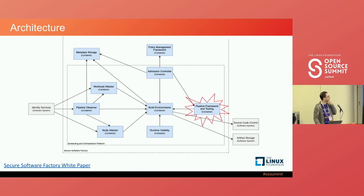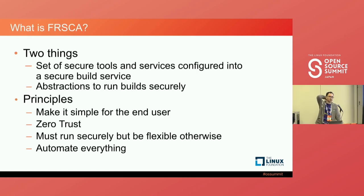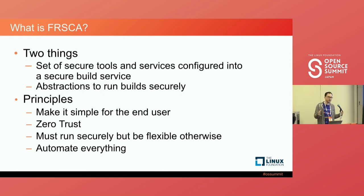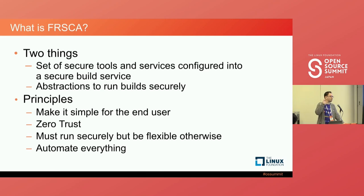The area highlighted in red is what we're focused on for this talk. So what is Fresca? Fresca is mostly two main things. The first is a set of secure tools and services configured into a secure build service — components like SPIFFE/SPIRE, Tekton, Tekton Chains, and other tools configured securely. But that's only one piece of a shared responsibility. You also want to make sure the builds you're running are secure. The second piece is abstractions to actually run builds securely — ensuring required tasks like SBOM generation actually get run.